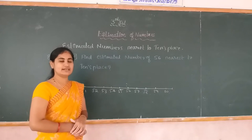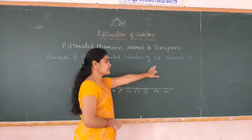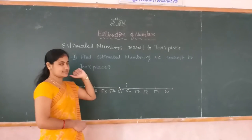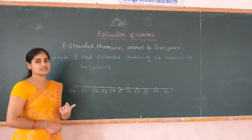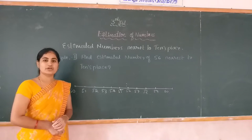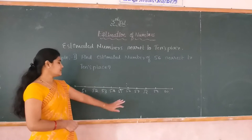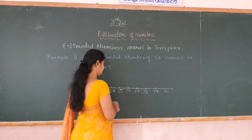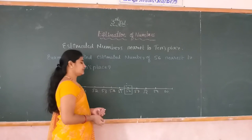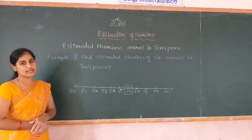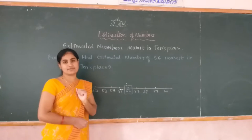I have already written the question: find the estimated number of 56 nearest to the tens place. I have drawn a number line with numbers from 50 to 60. The number 56 is present on this number line. You need to find the estimated number of 56 nearest to the tens place.